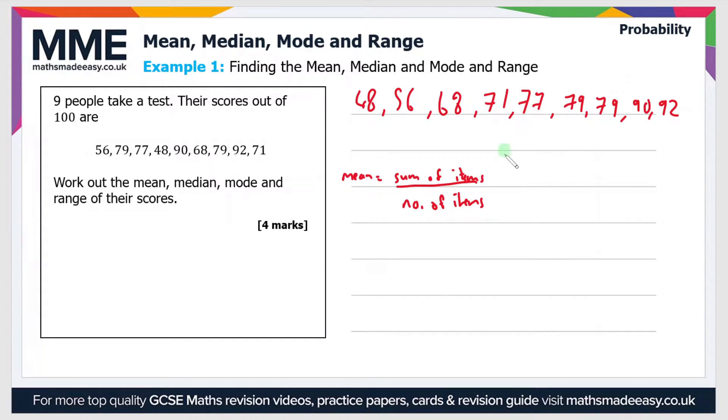So the sum of the items in this case is where we just add all of the test scores together. If you do that you get a value of 660 and then the number of items is 9 as that's the number of people who took the test.